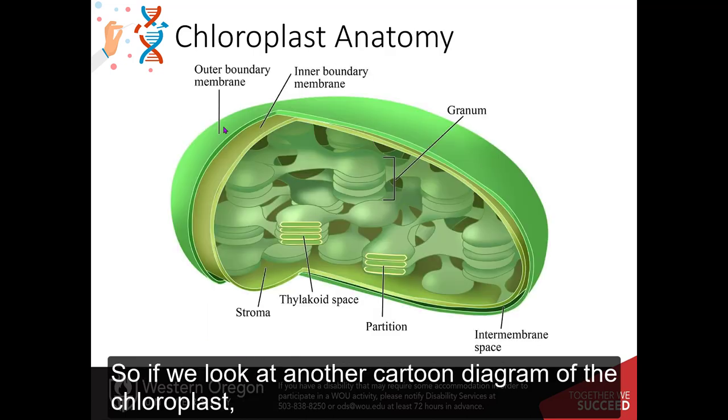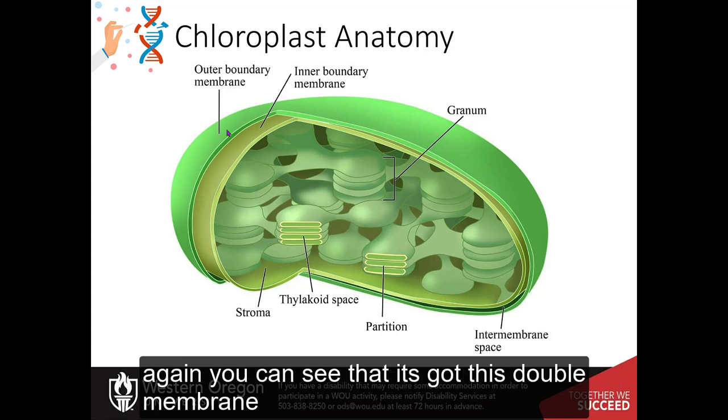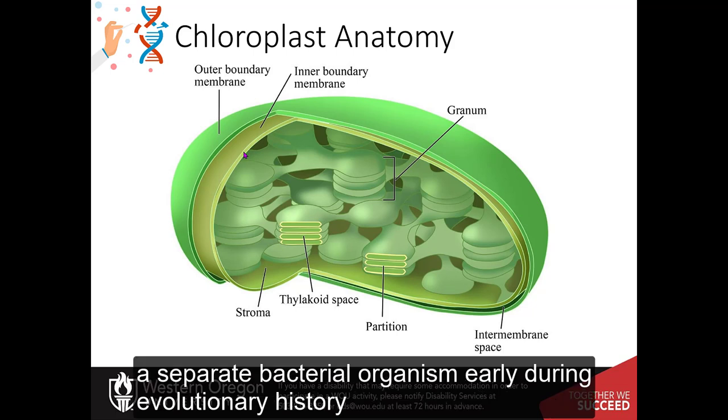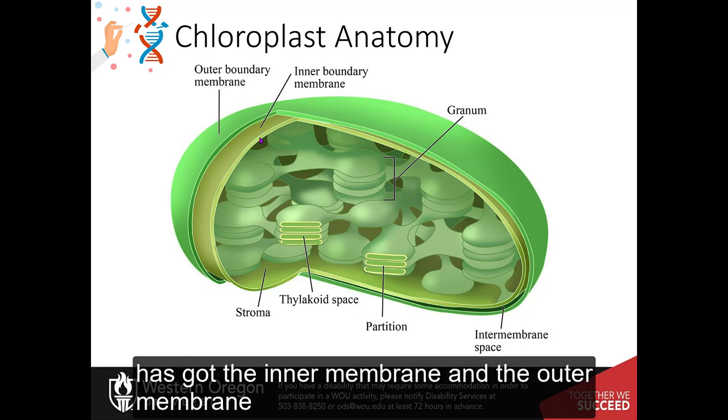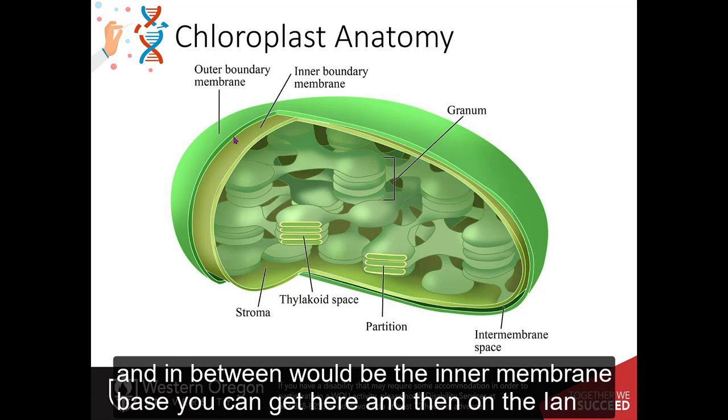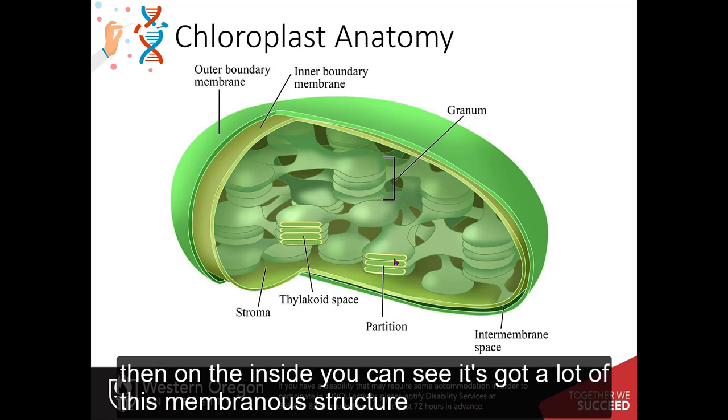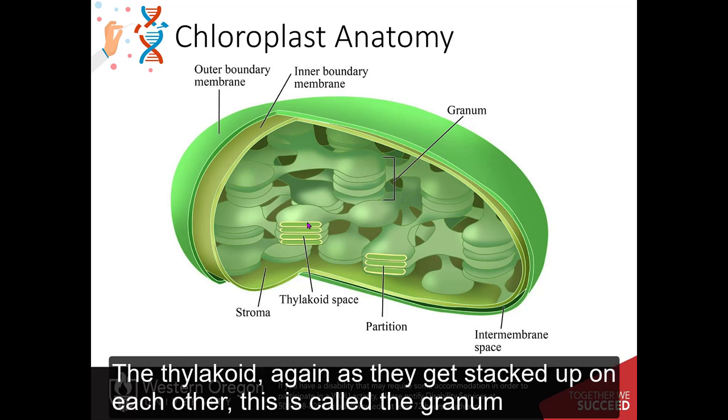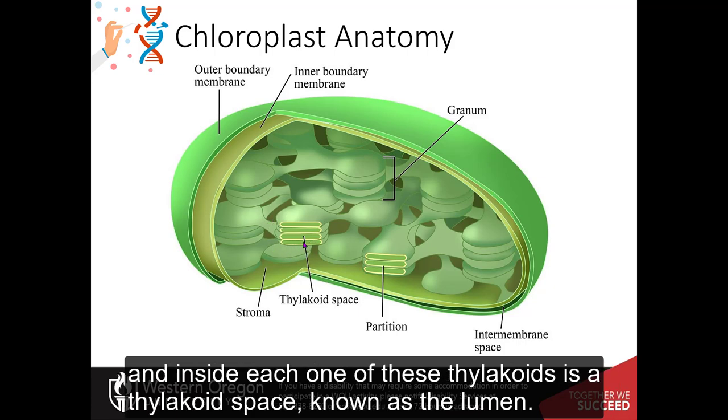So if we look at another cartoon diagram of the chloroplast, again, you can see it's got this double membrane, suggesting that it was engulfed as a separate bacterial organism early during evolutionary history. It's got the inner membrane and the outer membrane. And in between would be the inner membrane space. So you can see that here. And then on the inside, you can see it's got a lot of this membranous structure. The thylakoids, again, as they get stacked up on each other, this is called the granum. And inside each one of these thylakoids is a thylakoid space known as the lumen.